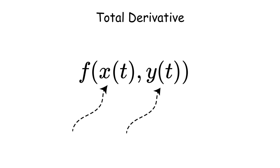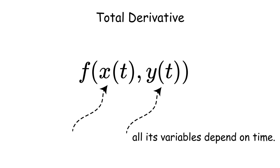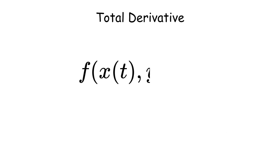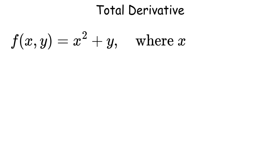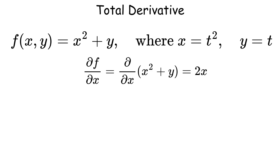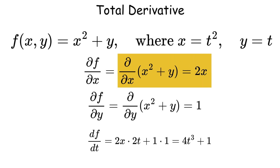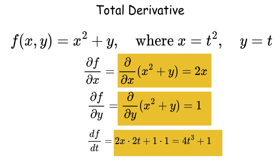The total derivative describes the rate of change of a function when all variables depend on a single parameter, such as time. For a function f of x of t and y of t, the total derivative is df over dt. For example, if f of x and y equals x squared plus y, with x equals t squared and y equals t, then partial f over partial x equals 2, partial f over partial y equals 1, and df over dt gives the combined effect of changing variables. This is vital in dynamics and thermodynamics.